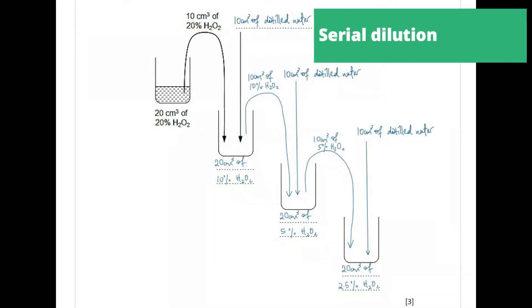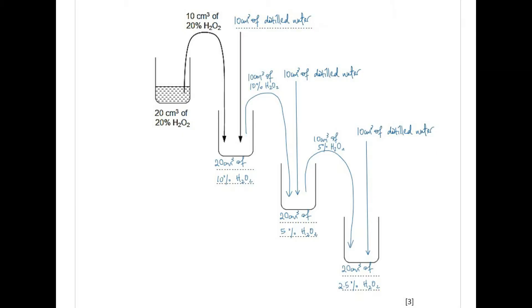As we mentioned just now, we are going to make a range of concentrations using serial dilution. In this case, we are going to half the concentration each time. So we have 20%, 10%, 5%, 2.5% in this experiment. To do this, we add an equal amount of the previous solution to an equal amount of distilled water. So 10 cm cubed to 10 cm cubed.